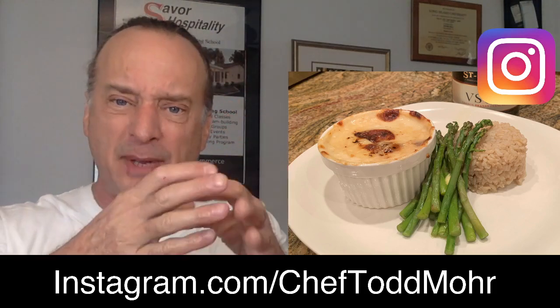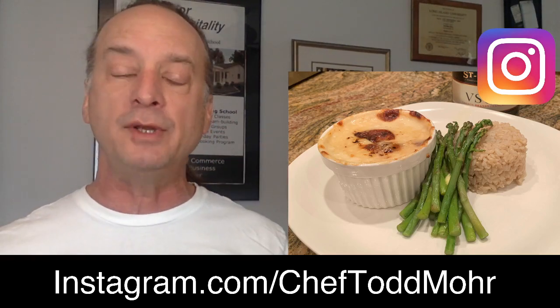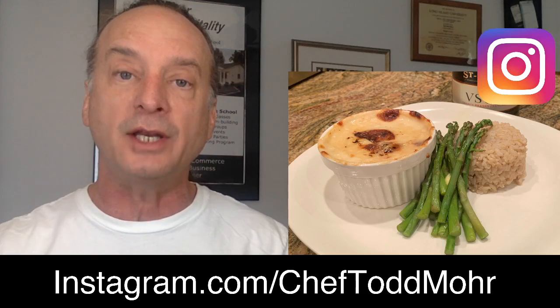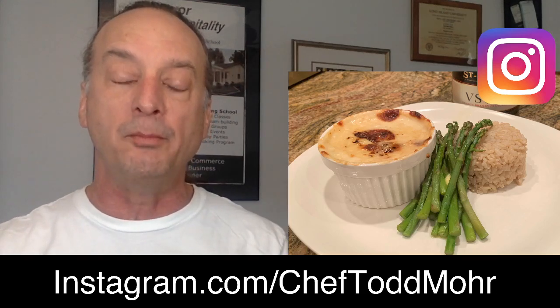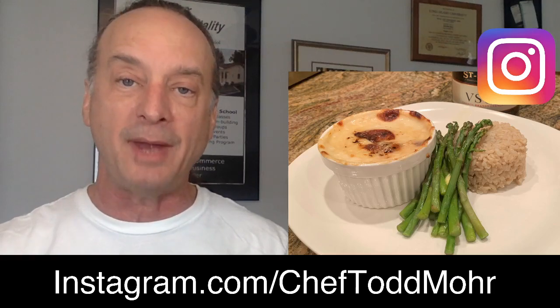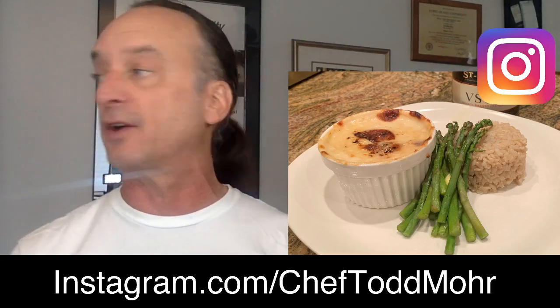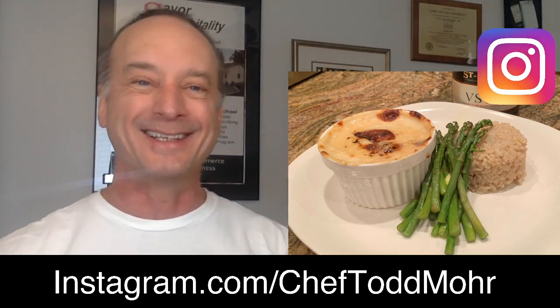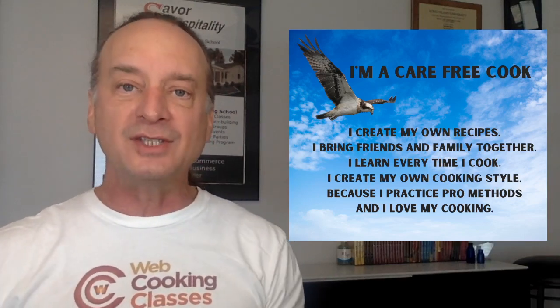But what it is is my local seafood place Miss Mary's got these little bay scallops, the little sweet bay scallops, not the big sea scallops. So a simple cream sauce: butter, onion and garlic sautéed in butter, flour to make roux, milk to make béchamel, mount it with a little cream, add a little brandy, poach the scallops in it, serve it with brown rice and asparagus spears. How do I do it? Well I'm a carefree cook. I create my own recipes, I bring friends and family together, I learn every time I cook because I create my own cooking style. I practice pro methods and I wind up loving my cooking. That's the carefree cooks creed.